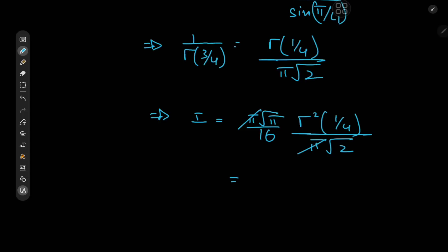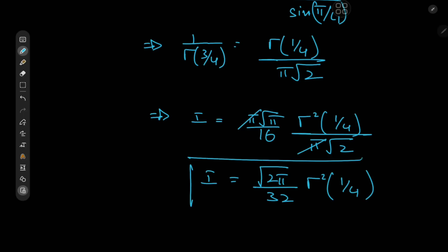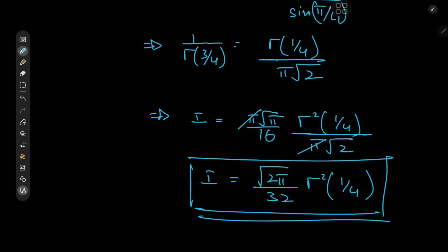You could also express this in terms of the lemniscate constant, but I just like the gamma squared one quarter term in itself. I hope you enjoyed the video and learned something from it. Be sure to like and subscribe, drop me a follow on Instagram, and if you like the channel and the effort I'm putting out, consider supporting me on Patreon — all links in the description box. Thank you, see you next time.